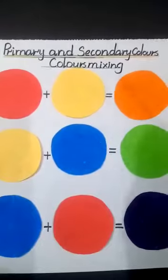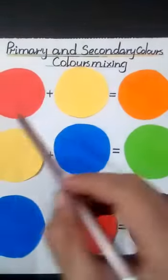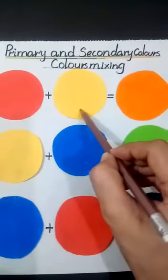So kids, how we get secondary colors by mixing? When red color is mixed with yellow color to produce orange color.